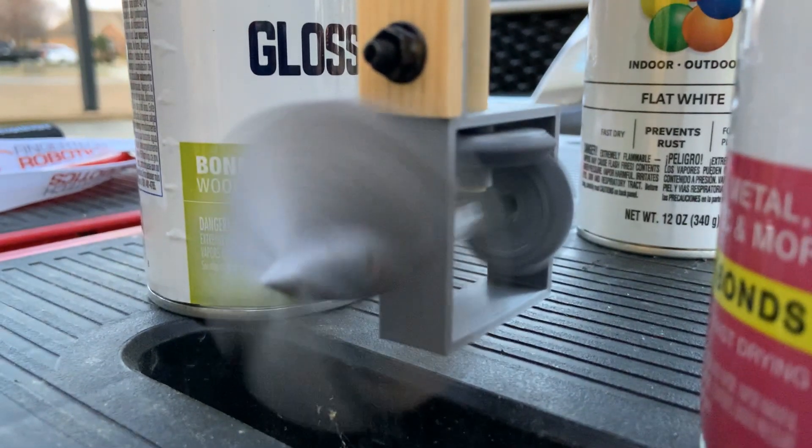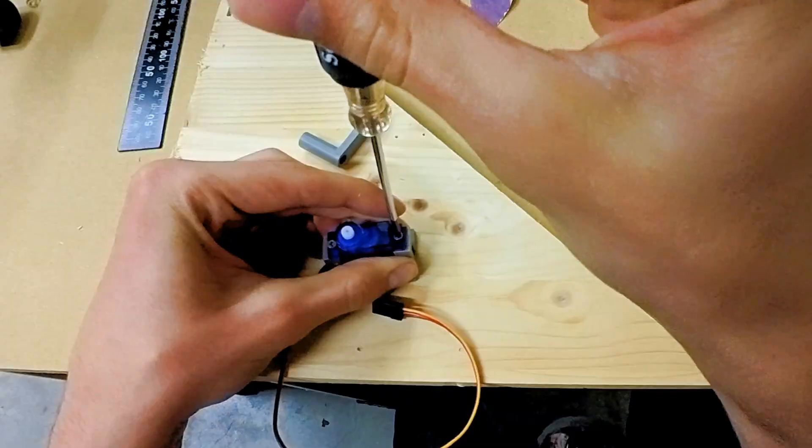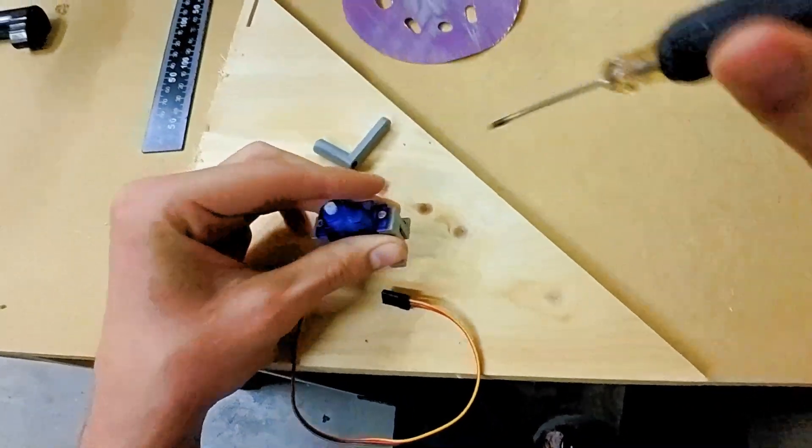Next, I got to work on the rudder. I 3D printed most of the parts for the rudder assembly, and putting it together was easy. This system worked significantly better than the last one.